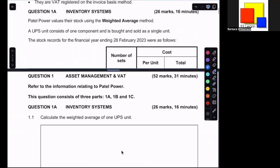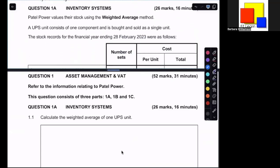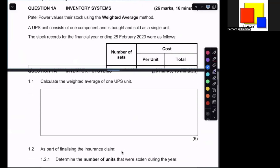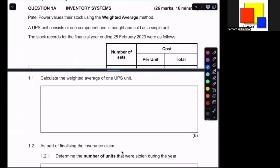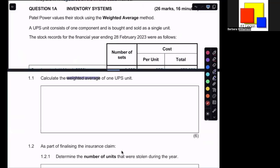Before we look at the information relating to Part 1a, we need to first see what's required. Part 1.1 asks us to calculate the weighted average of one UPS unit. Remember that the calculation for weighted average is simply to take the total value of the inventory divided by the quantity. It's exactly the same formula that we'll use when we work out average share price for companies. I always like to pop the formula in, not that you need to show any kind of formula, but just for myself, because then when I get the information, it'll be easier to remember where I need to use it.